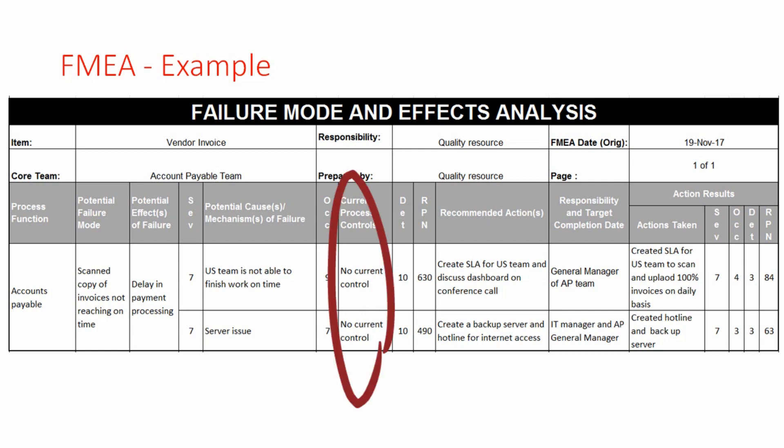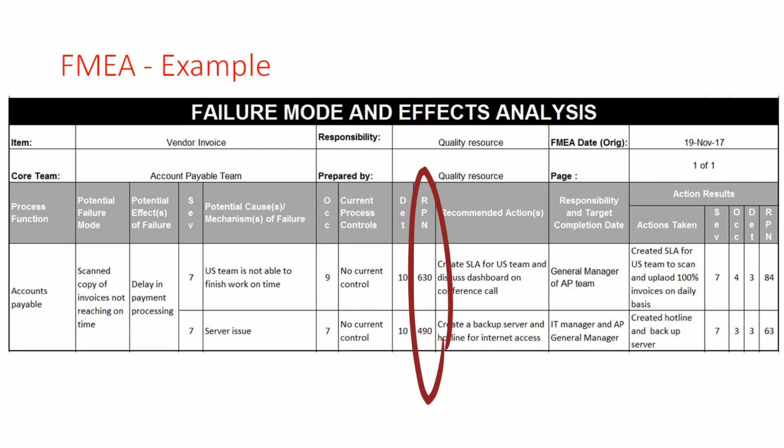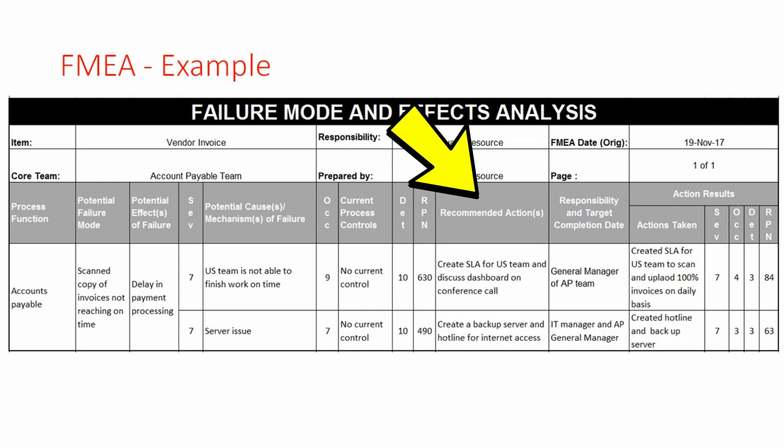There were no process controls for either of the issues, so a detection score of 10 was given to both. The RPN score of 630 is the result of 7 × 9 × 10. Similarly, the RPN score of 490 is the result of 7 × 7 × 10. Since both scores are well above 100, a recommended action plan needs to be created for both failure modes.